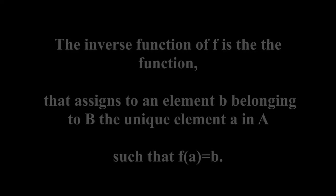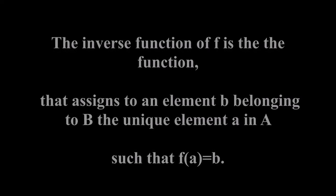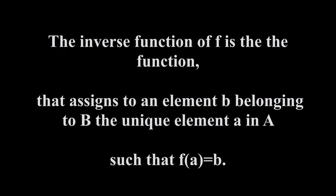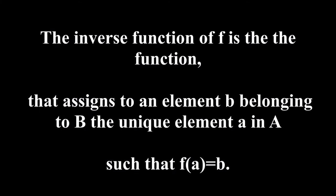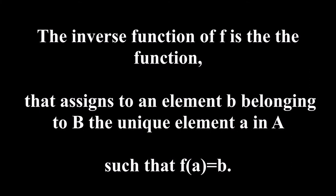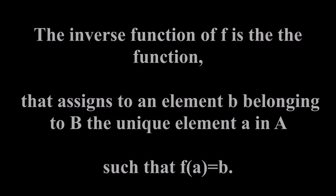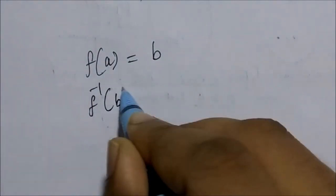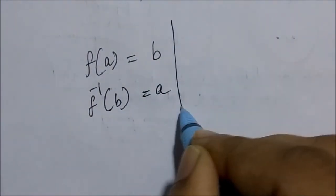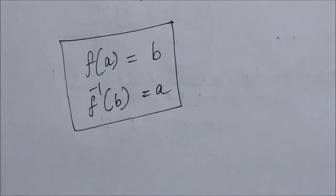When f is a one-to-one correspondence from set A to set B, the inverse function of f assigns to an element b belonging to set B the unique element a in A such that f(a) = b. The inverse function is denoted f⁻¹, and hence when f(a) = b, f⁻¹(b) = a.